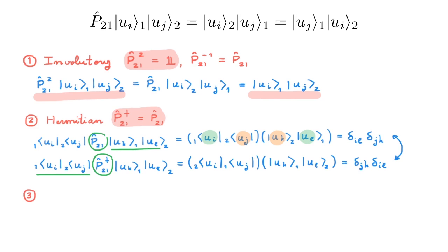The third property is that P21 is unitary, so that P21 dagger equals the inverse of P21. This actually follows trivially from the first two properties, as the operator is both Hermitian and its own inverse. Essentially these three properties generalize to transpositions for any n, and the proofs work in exactly the same way as they work for P21.